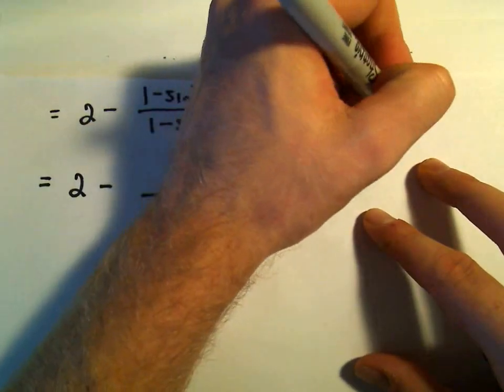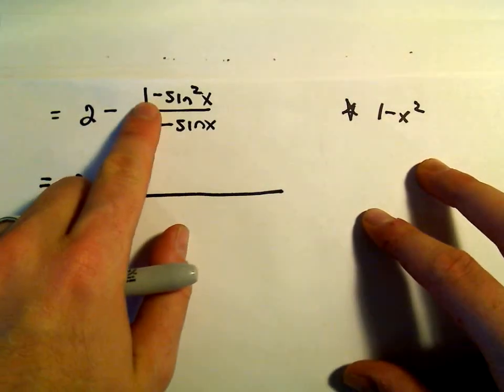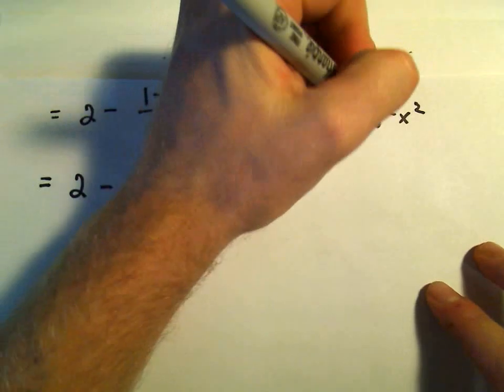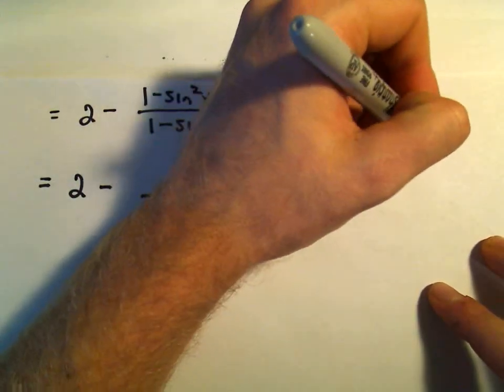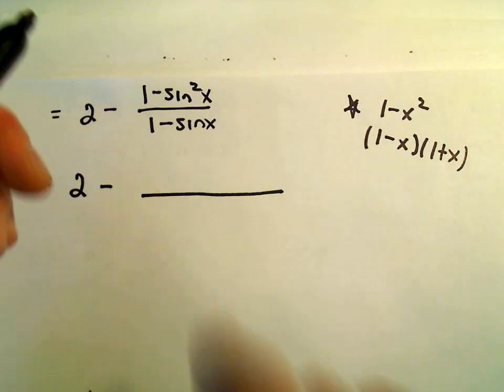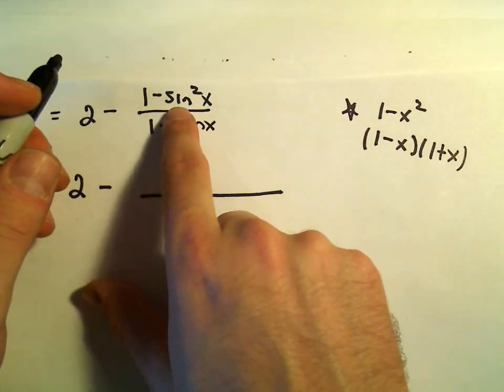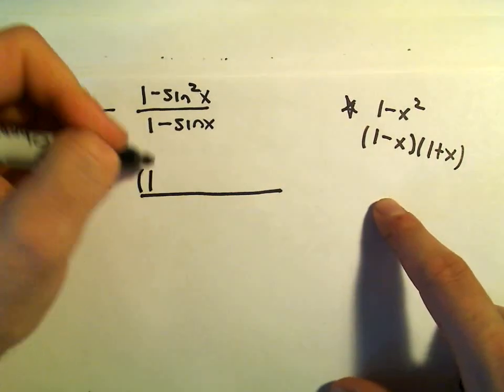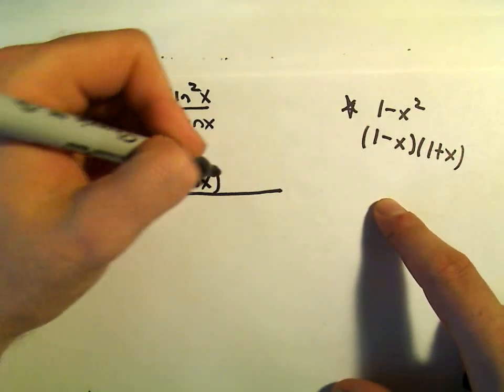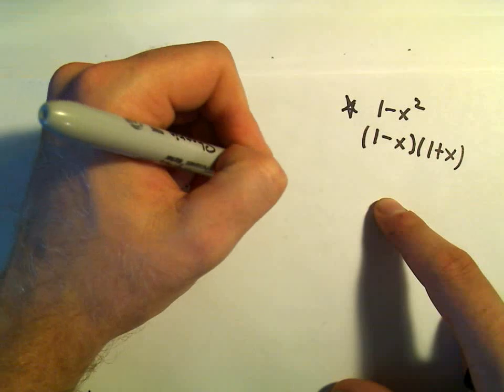if this was like 1 minus x squared, you've got 1 minus something squared. How does 1 minus something squared factor? It factors as 1 minus x and 1 plus x. Again, it's a difference of perfect squares. So instead of just plain old x, we've got sine x. So 1 minus sine squared is going to factor as 1 minus sine x and then 1 plus sine x.